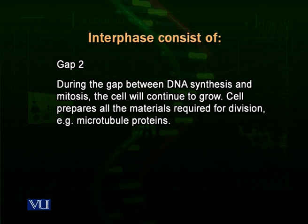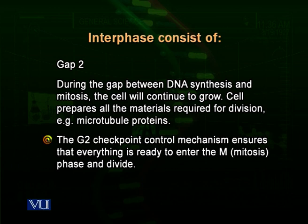The most important elements produced during the G2 phase are microtubules, which are required to attach to chromosomes and move them correctly toward the poles of the cell. There is a G2 checkpoint that checks whether all materials required for the M phase are complete. If complete, the checkpoint allows the cell to proceed to mitosis. If not, the control mechanism stops the cell until materials are remade, after which the cell enters the M or mitosis phase.